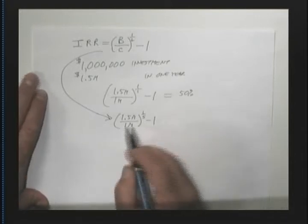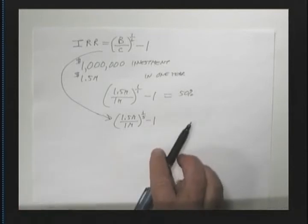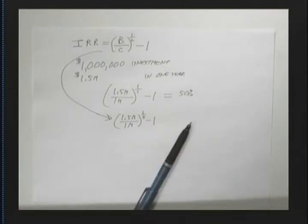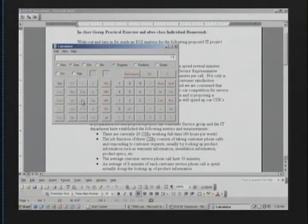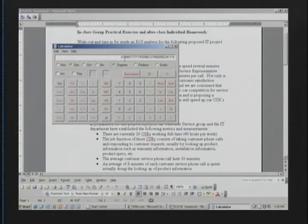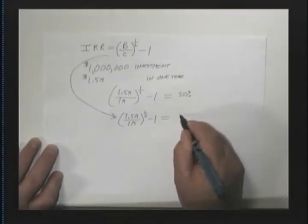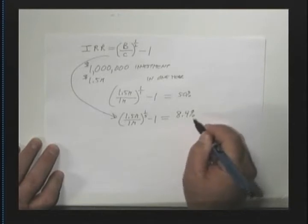Well, if we take this ratio right here, $1.5 million, and we raise that to $1.5 million raised to the one fifth power, so that's 0.2, that's 1.084, and now minus one, we come out with 0.084 or 8.4%. So, we see that this comes out to be 8.4%, all right?